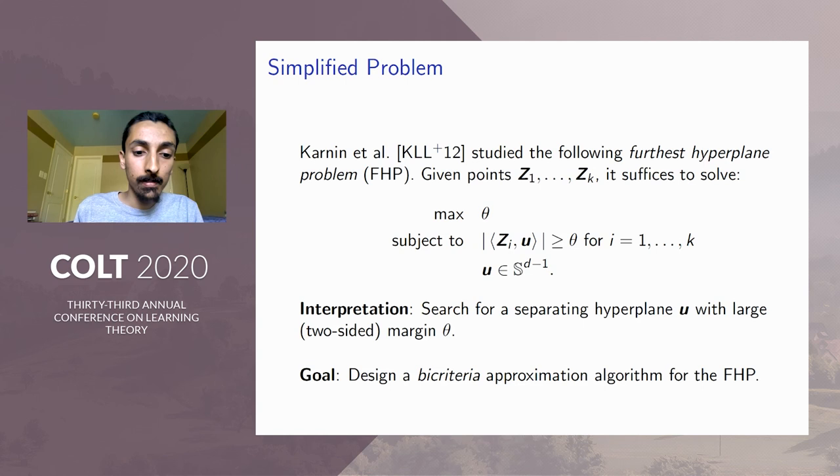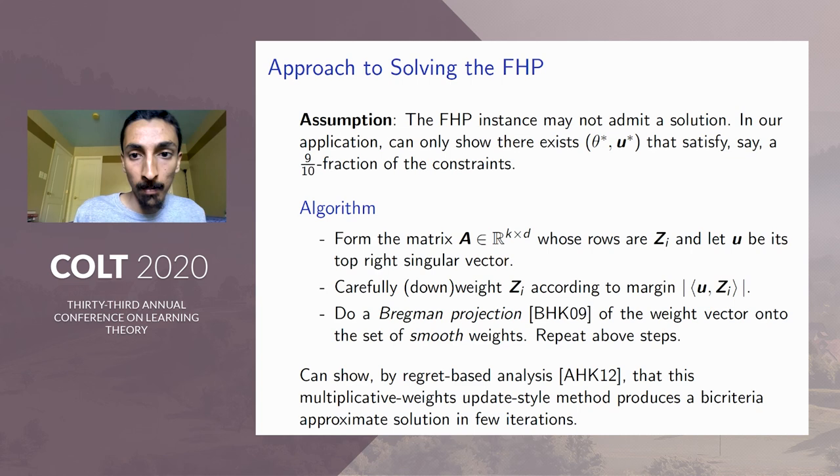So now I'm going to discuss how we actually solve this furthest hyperplane problem. So in our particular application, unfortunately, this furthest hyperplane problem instance may not actually admit a feasible solution to begin with. So this immediately breaks the algorithm of Karnin et al. So this is where we have to introduce some new ideas. So we can only show that there exists a solution, θ* and u*, which satisfies 90% of the constraints.